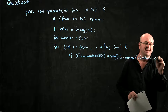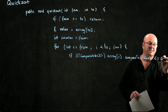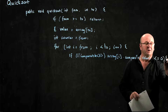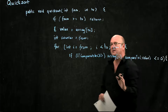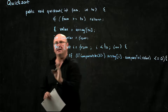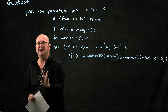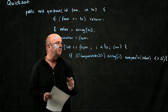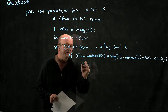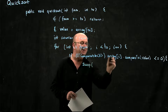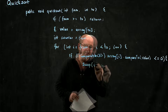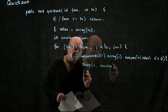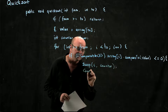If that is less than or equal to zero, we want to swap that element to the left-hand side of the list. So we're going to call swap with `i` and `counter`, and we're going to increment `counter`.